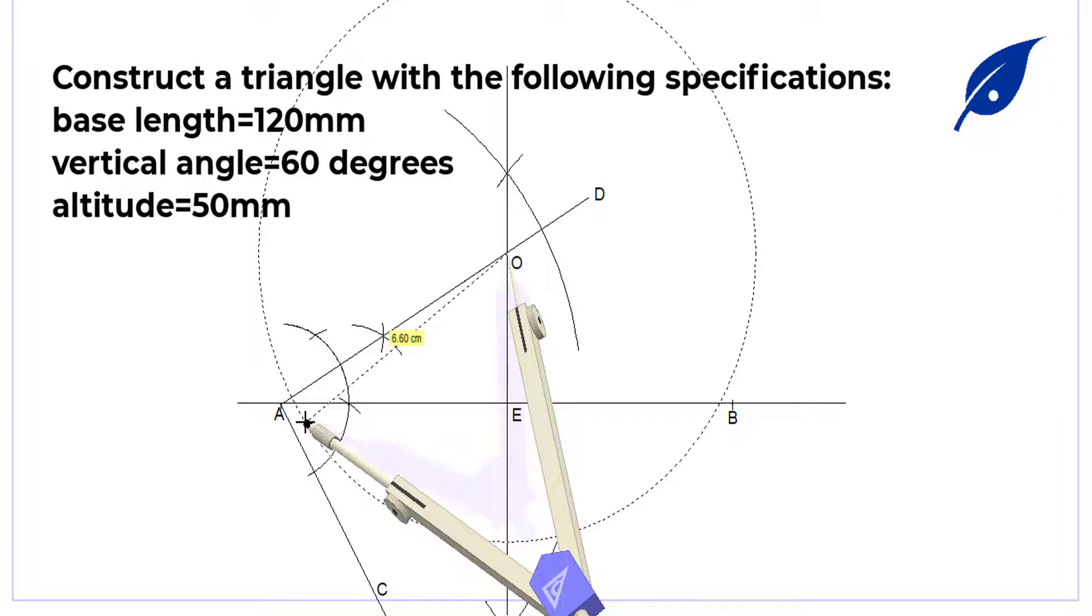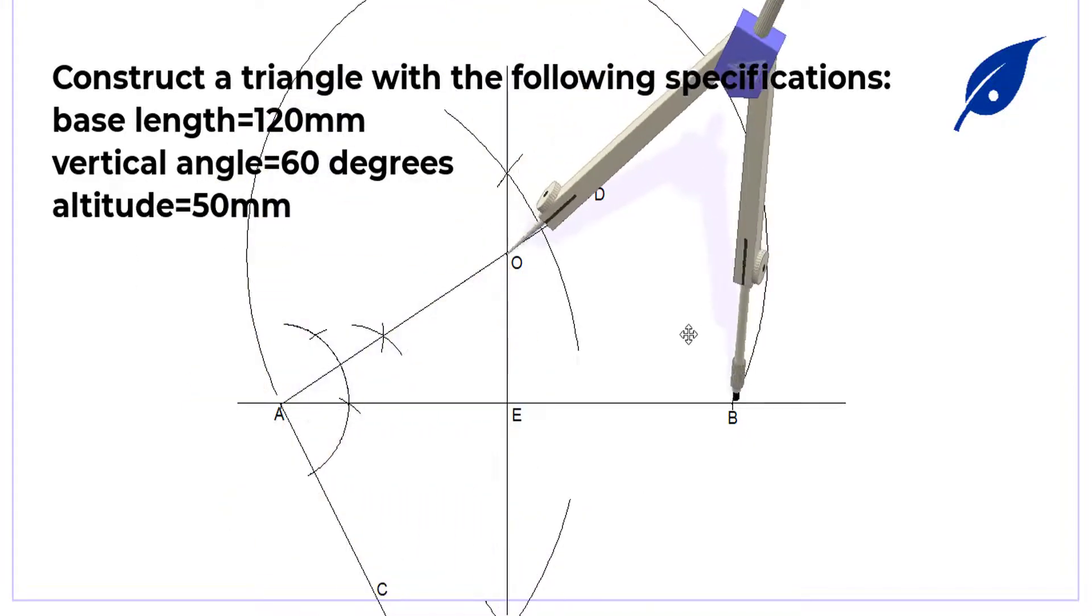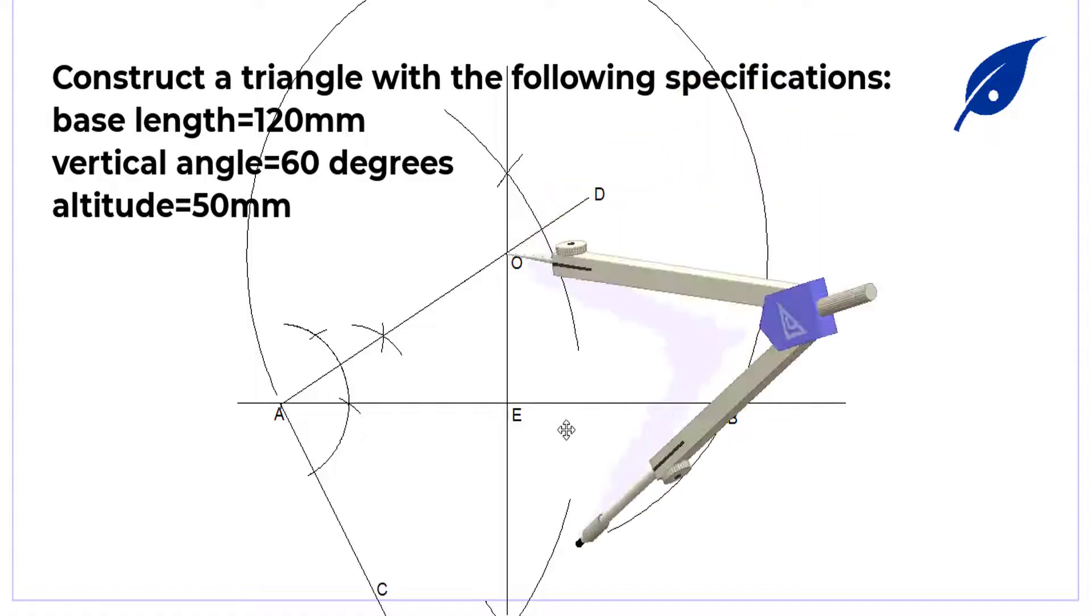So describe the circle so that it will touch the point E and B. That's the radius EO.